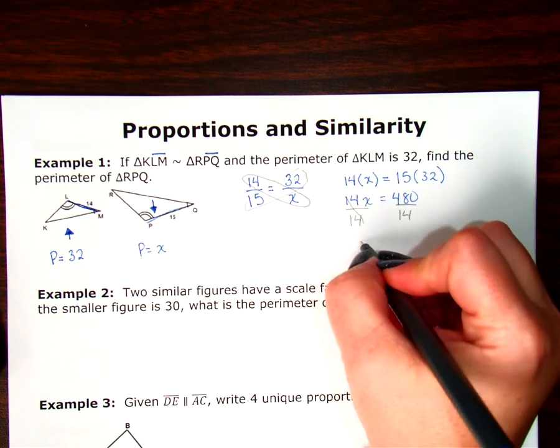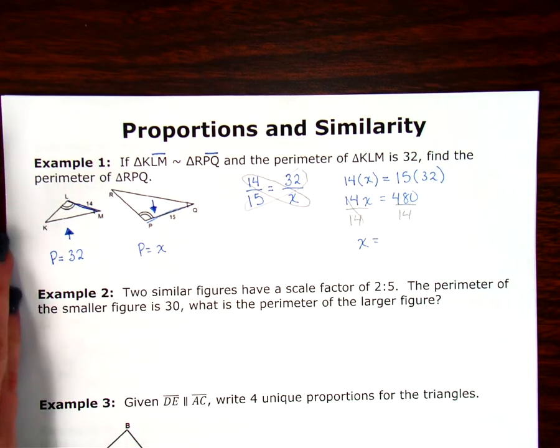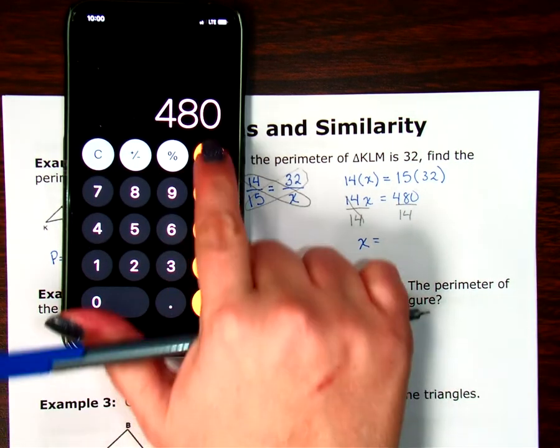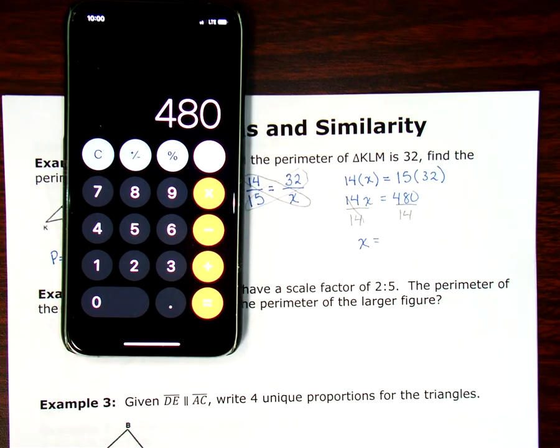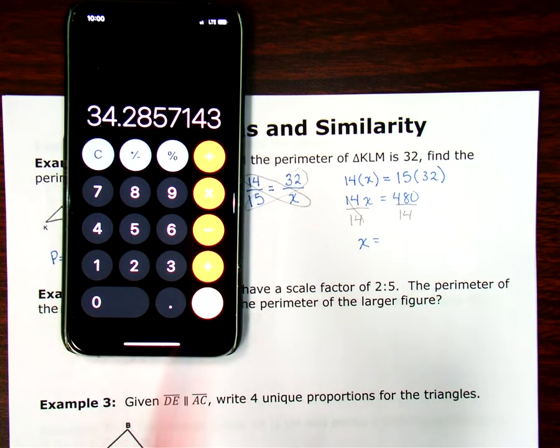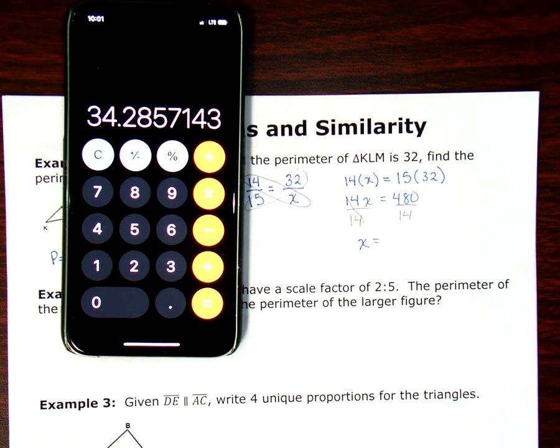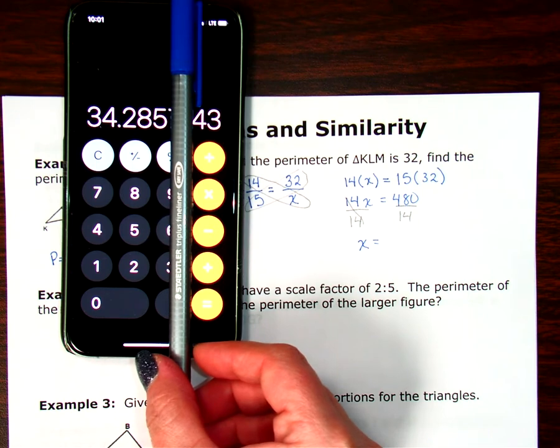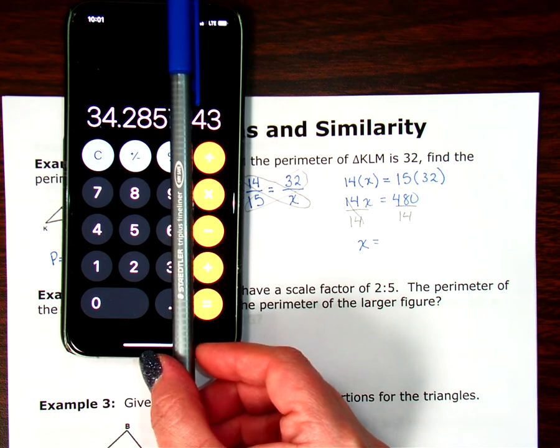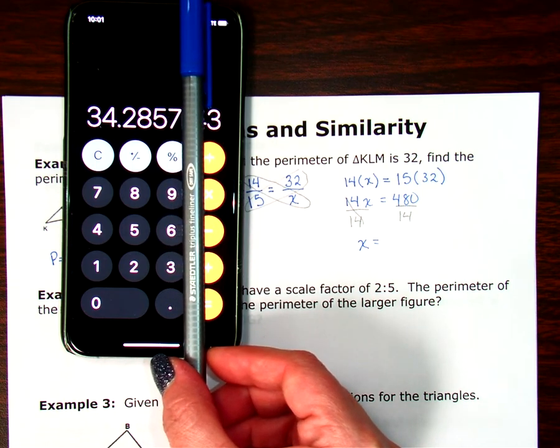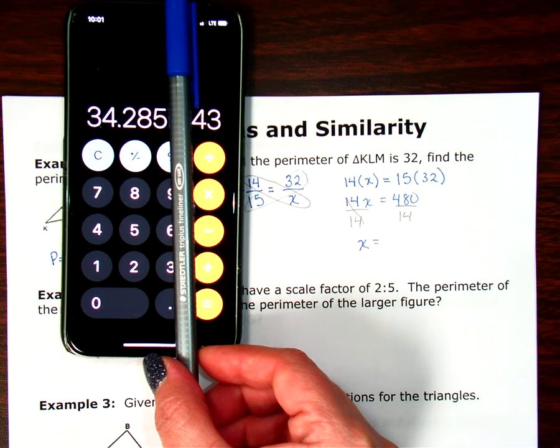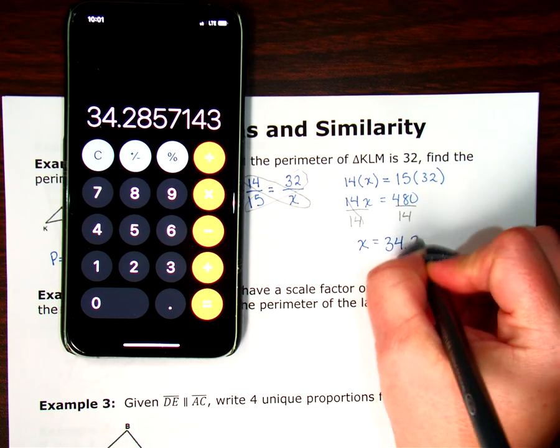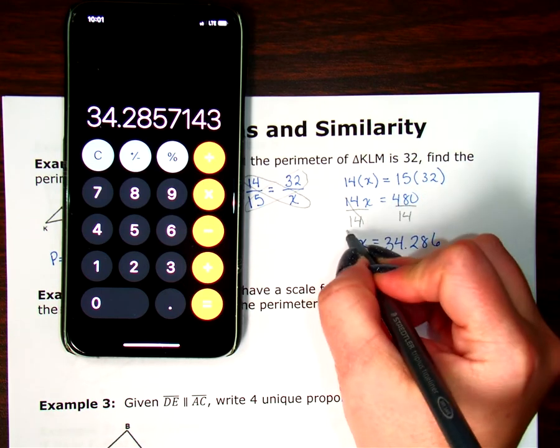And X equals 480 divided by 14. I already have the 480 in my calculator, so I can just hit divide by 14. And I get 34.2857143. We're going to round this to three decimal places, so 285. I look after the 5 and it's a 7. So I do want to round that up to 34.286.